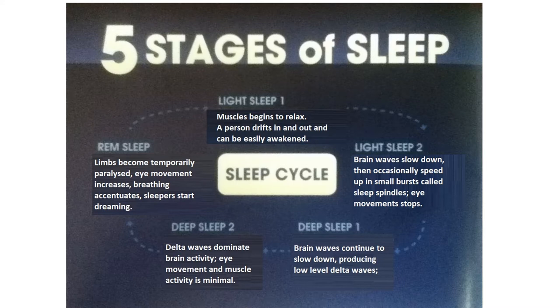Light sleep, stage 2: brain waves slow down, then occasionally speed up in small bursts called sleep spindles. Eye movement stops, and then starts deep sleep.